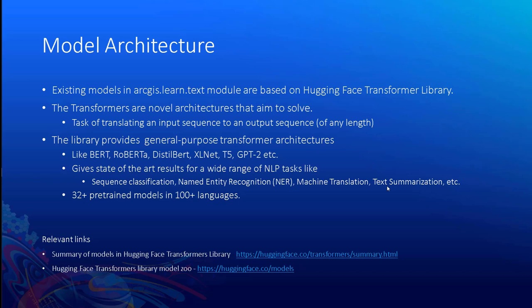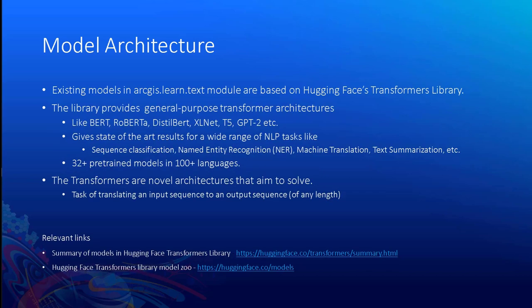Before we dig deeper into these models, let's talk about the core engine running behind them — the model architecture. Majority of the text models in ArcGIS Learn are based on an open source library called Hugging Face Transformers Library. This library aims at providing state-of-the-art NLP models for further training or ready-to-use purposes. It provides general purpose transformer architectures like BERT, XLNet, T5, GPT, etc., which give state-of-the-art results on almost all the NLP tasks discussed.